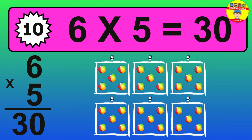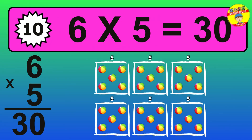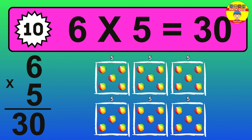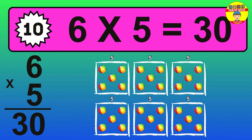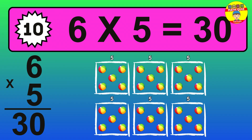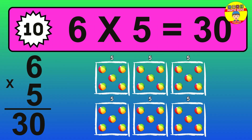The answer is 6 times 5 is 30. To calculate, we have 6 groups with 5 balls each one. So, how many balls do we have? 30 balls.